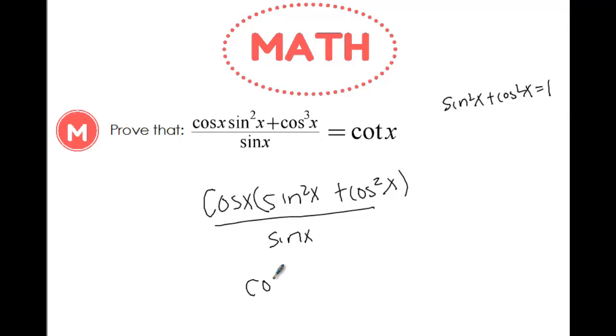So it's now going to turn into cosine x times 1 over sine x. Cosine x times 1 is just cosine x. Sine stays the same. And we know cosine over sine is cotangent. So we know that we have simplified our problem because we got cotangent as our final answer.